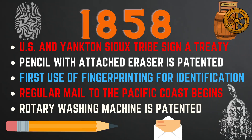In 1858, the U.S. and Yankton Sioux tribe signed a treaty allowing the U.S. to acquire 11 million acres in South Dakota while creating the 430,000-acre Yankton Sioux Indian Reservation. Also in 1858, the first use of fingerprinting for identification began when William James Herschel used it as a magistrate in colonial India. Regular mail to the Pacific coast began, the pencil with attached eraser was patented, and the first rotary washing machine was patented.